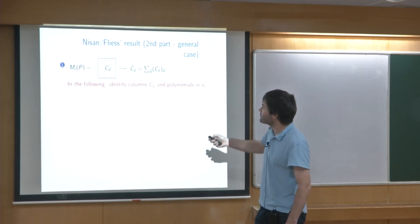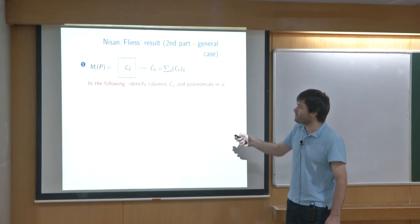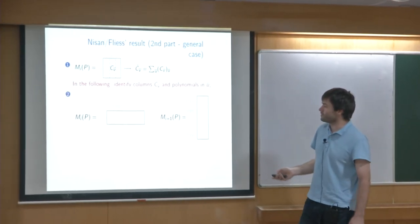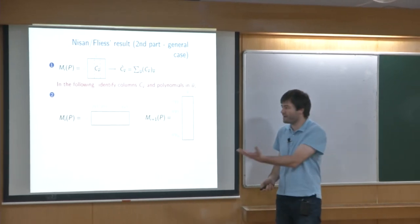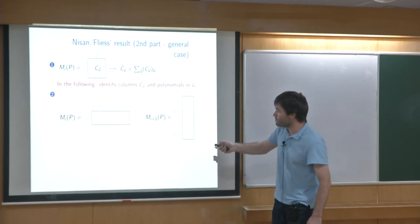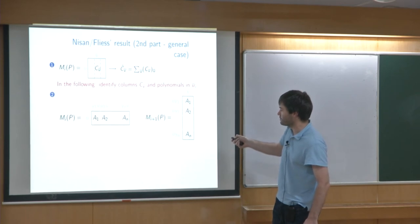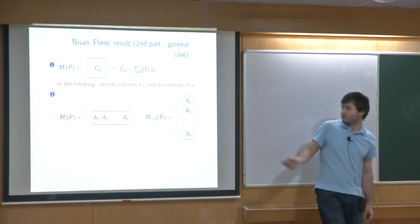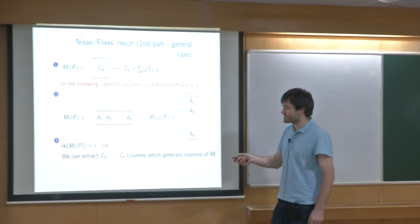Now consider what happens when we want the minimal size simultaneously across all layers. Starting from matrix M_i, we can identify each column as a polynomial in the u-variables. An important observation is how to go from M_i to M_{i+1}: the coefficient in front of u·y·v is the same here as u·(i)·v, so going from M_i to M_{i+1} amounts to just cutting along the first variable and reordering blocks. We know that if the rank of the matrix is r, we can extract r columns that generate all columns — the classic rank definition — and construct the ABP with nodes computing these polynomials.